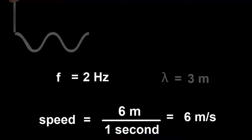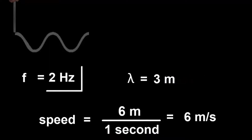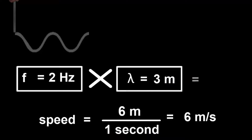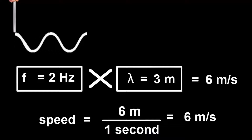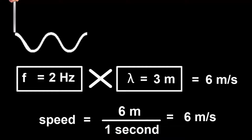Notice that the frequency — two hertz — multiplied by the wavelength — three meters — also gives the same answer: six. Is this a coincidence? Maybe not. Because in one second, all waves must move a distance of the number of waves made, which is their frequency, times the length of each wave, which is their wavelength, equalling their speed.